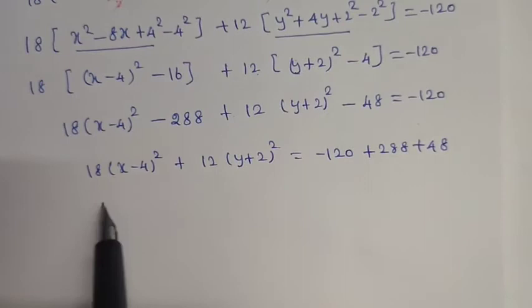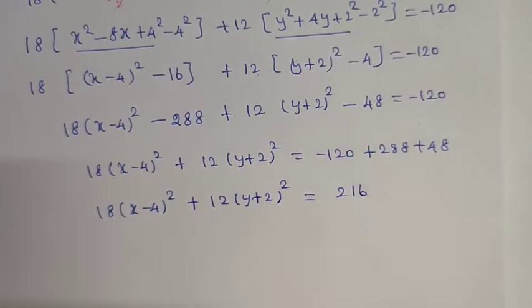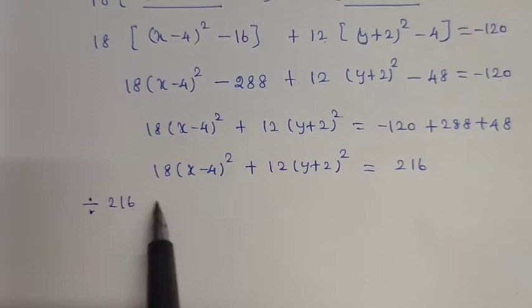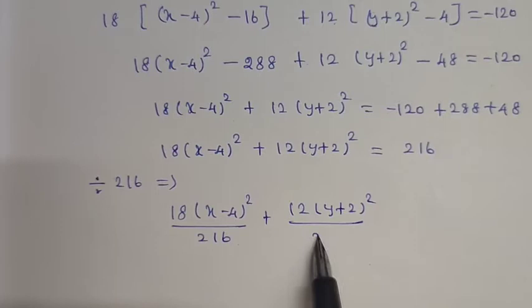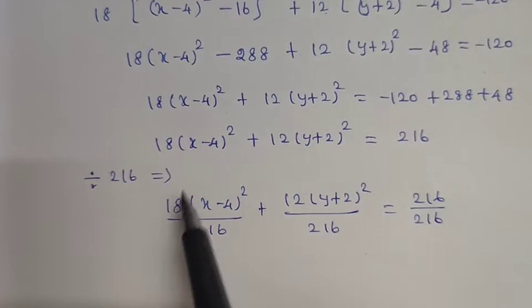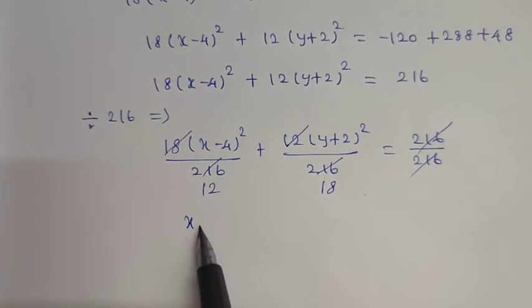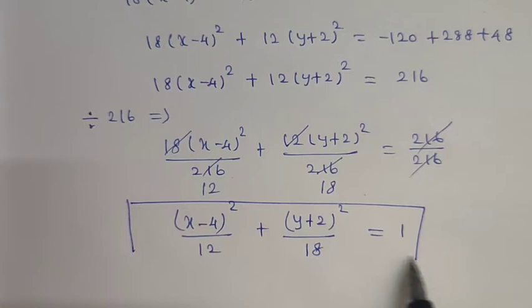So 18(x minus 4) squared plus 12(y plus 2) squared equals 168. Dividing everything by 216, we get (x minus 4) squared divided by 12 plus (y plus 2) squared divided by 18 equals 1. This confirms it is an ellipse.